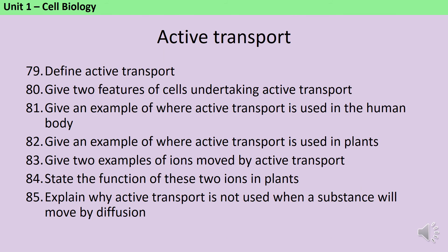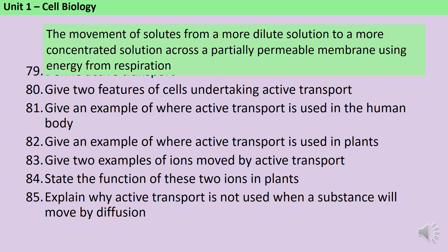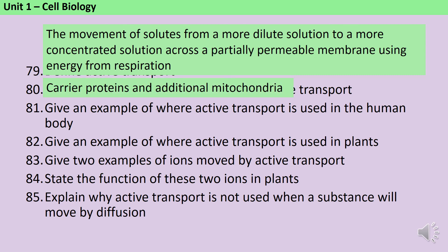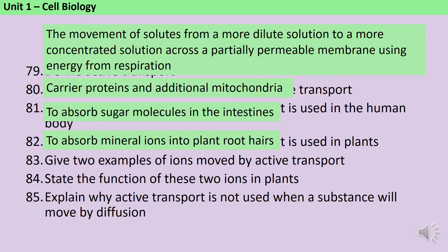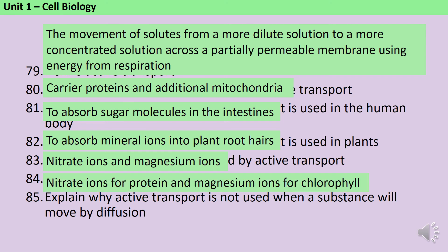Active transport is the movement of substances from a more dilute solution to a more concentrated solution — in other words, diffusion happening in reverse. It happens across a partially permeable membrane and requires energy from respiration. In order for cells to carry out active transport, they need carrier proteins and additional mitochondria to provide the energy. In the human body, we use active transport to absorb sugar molecules in the intestines. Plants also use active transport to absorb mineral ions into the root hairs — two examples are nitrate ions, necessary for making proteins, and magnesium ions, necessary for making chlorophyll. We only use active transport when necessary because it requires energy, whereas diffusion is a passive process which doesn't cost anything.